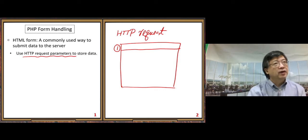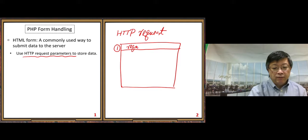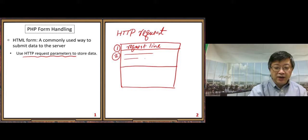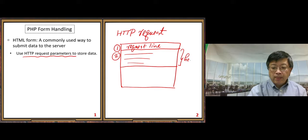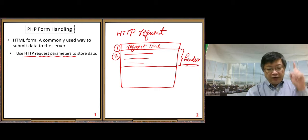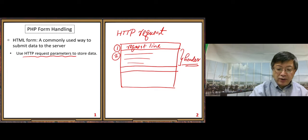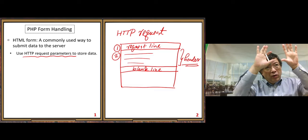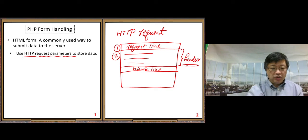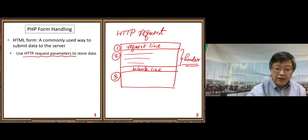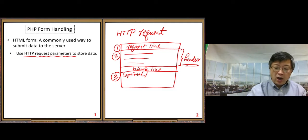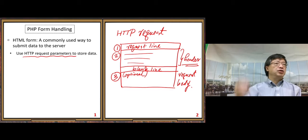The first component is the first line, called the request line — just one line. The second part is a block of many lines, called the header part. After the headers, there is a blank line as a separator, because otherwise we wouldn't know which part is the second component and which is the third. After that blank line comes the optional request body — sometimes you don't have it, so it's optional.